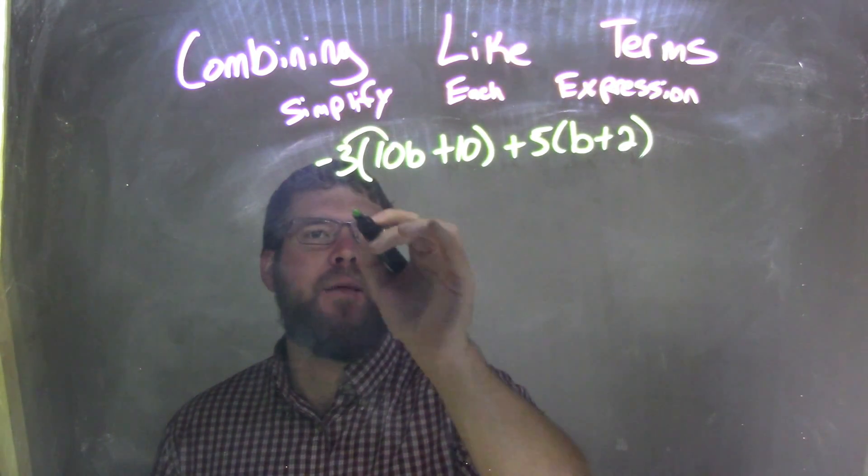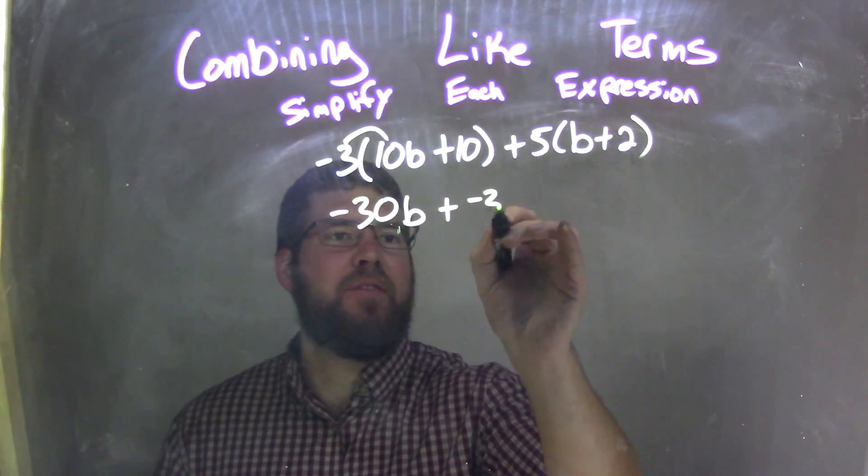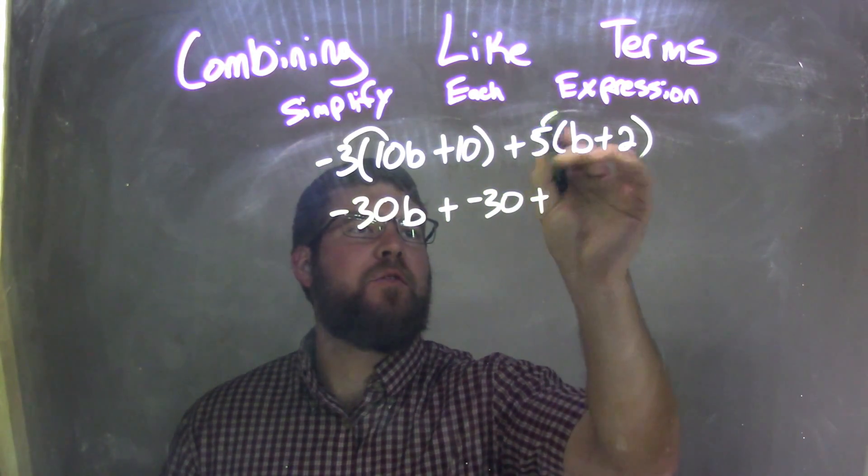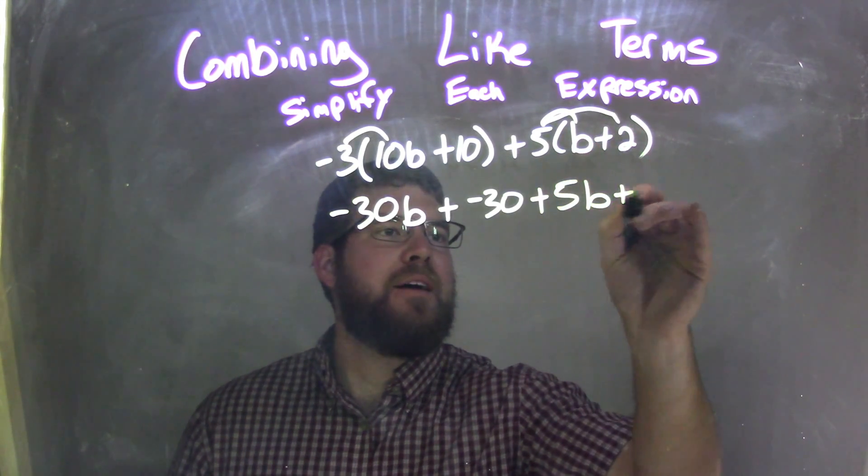So negative 3 times 10b is negative 30b, plus negative 3 times 10 is negative 30, plus 5 times b is 5b, and 5 times 2 is 10.